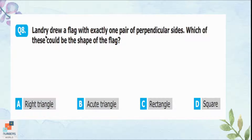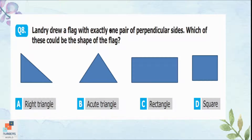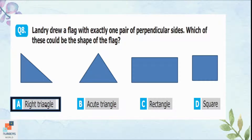Question 8: Landry drew a flag with exactly one pair of perpendicular sides. Two lines are perpendicular if they meet at 90 degrees. Options C (rectangle) and D (square) each have two pairs of perpendicular sides, so they are incorrect. Option B, an acute triangle, is also wrong because it has no right angle. Option A, the right triangle, is correct because it has only one pair of perpendicular sides — that is the shape of the flag.